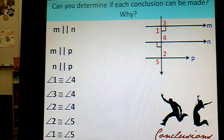So the question is, can you determine if each conclusion can be made? You're just trying to see, is somebody going to jump to this conclusion, or is this a valid conclusion for each one of these? And then a justification of why, because we love to justify why.